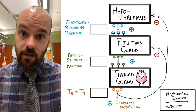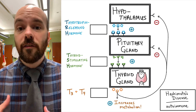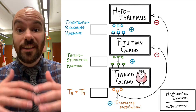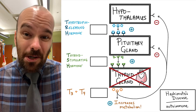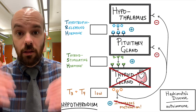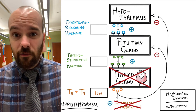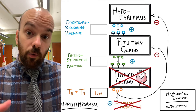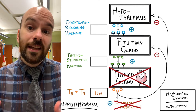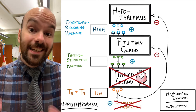Our fourth example is Hashimoto's disease, another autoimmune disease. Instead of stimulating the TSH receptors on the thyroid gland, the immune system is going to attack and destroy the thyroid gland itself. If the thyroid gland is getting destroyed, that causes a decrease in T3 and T4 production, leading to hypothyroidism and a lower metabolism. The patient would come in feeling lethargic, low energy, maybe putting on weight — classic hypothyroidism symptoms. If T3 and T4 levels are low, there's nothing to inhibit the pituitary and hypothalamus, so TRH will be high and therefore TSH will also be high.